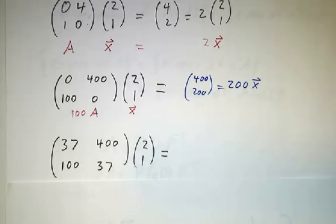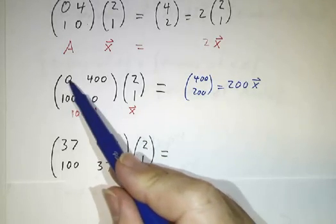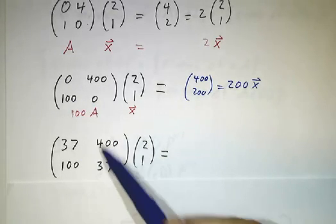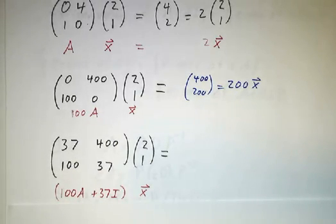Now let's look at this matrix. This matrix is similar to this matrix except it has the 37s on the diagonal. In other words, it's this matrix plus 37 times the identity. Now, 37 times the identity times x is just 37x. And 100A times x was 200x.